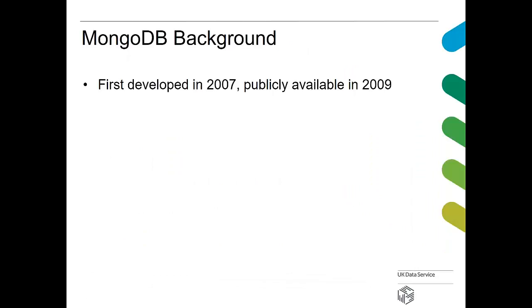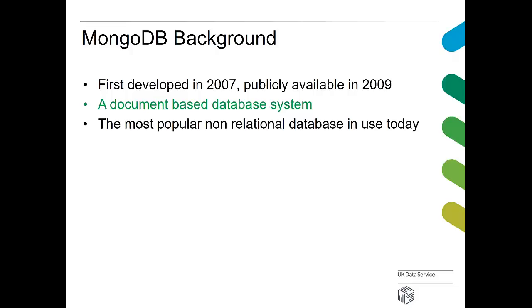MongoDB background: first developed in 2007, publicly available in 2009 — only about seven years ago, very new. It's a document-based database system. It's the most popular non-relational database in use today. It's open source and free to use — you can download and install it on your desktop, or you can have far more commercial enterprise-sized systems formed of large clusters of machines all running MongoDB.